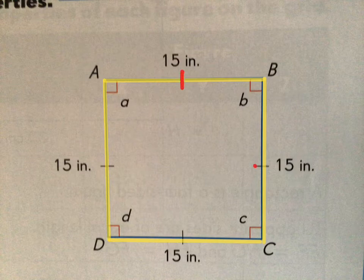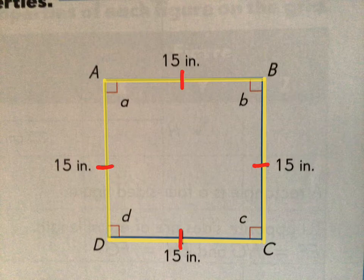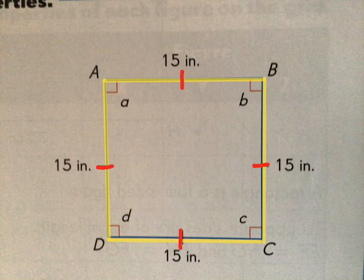So there's one tick mark, another one, another one, another one, that's showing that each of those sides are the same length. And you can see AB is 15 inches, so because this is a square, that also tells us that BC is going to be 15 inches, DC will be 15 inches, and DA will be 15 inches.